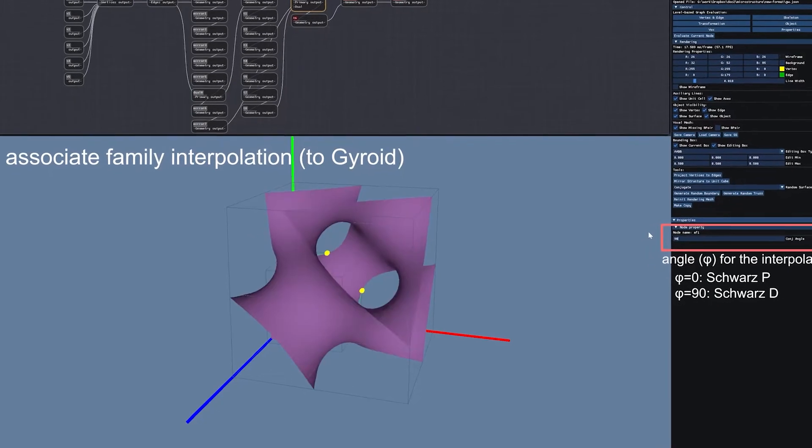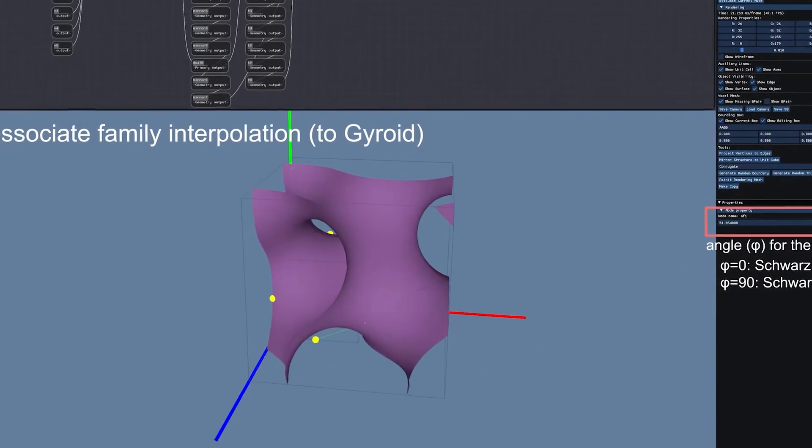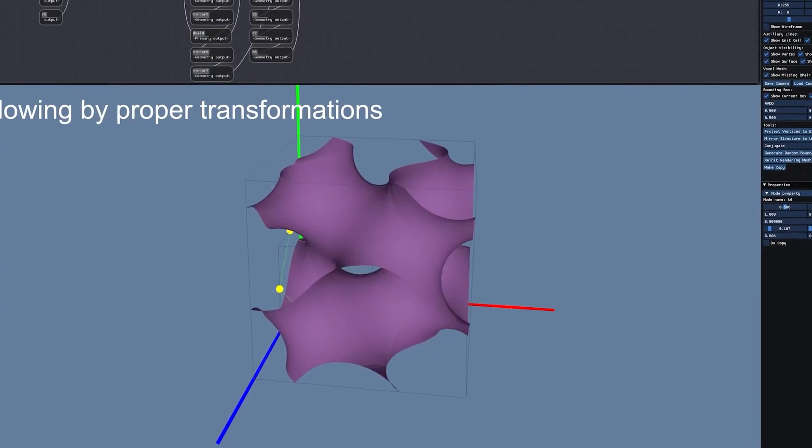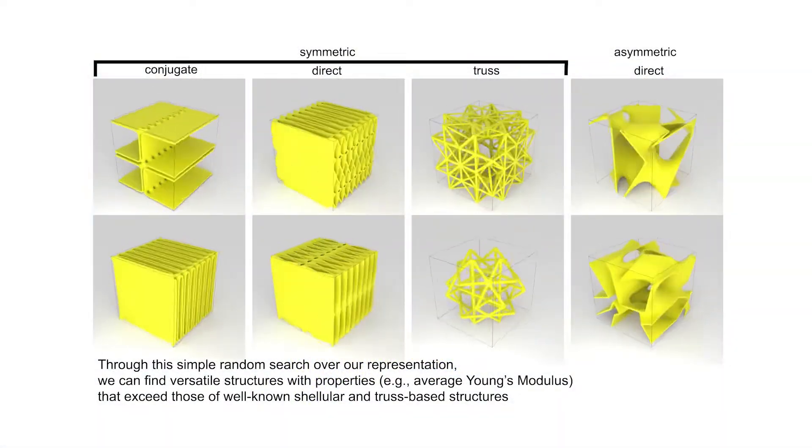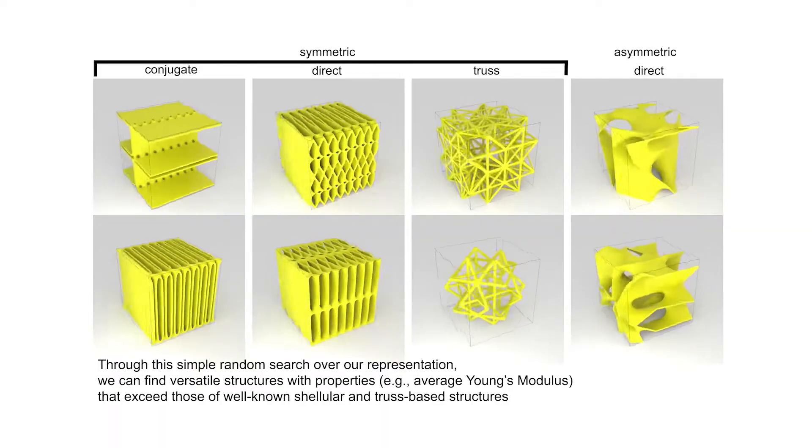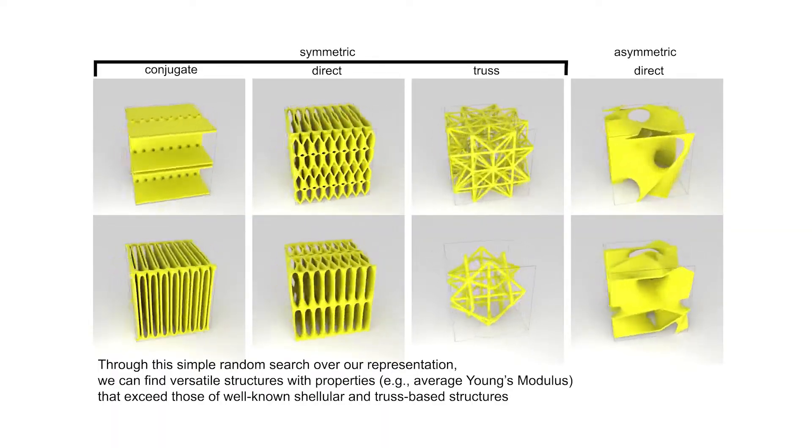The structures themselves are known as mechanical metamaterials. The interesting thing about these sorts of structures is that it's really the shape that matters. The primary thing we're interested in is how the shape affects the behavior of the specific material we've chosen.